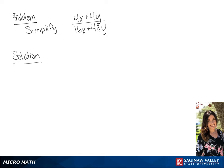We are going to simplify the fraction. The first thing we're going to do is factor the numerator. We can factor out a 4, so we have 4 times x plus y. In the denominator we can factor out 16, so we have 16 times x plus 3y.